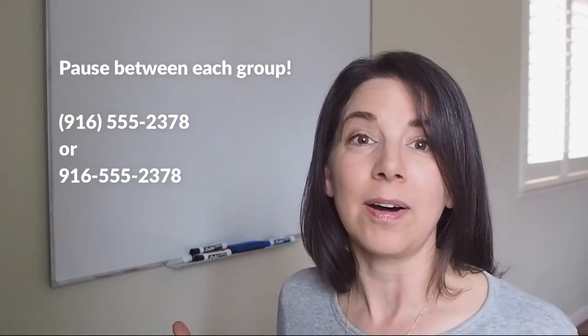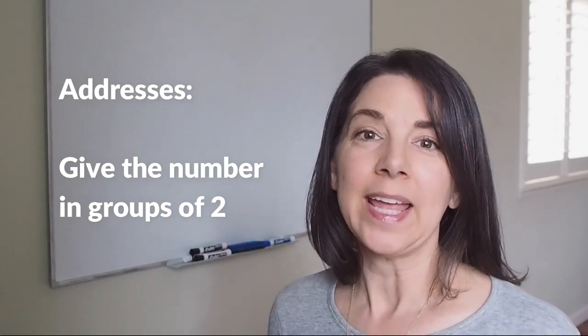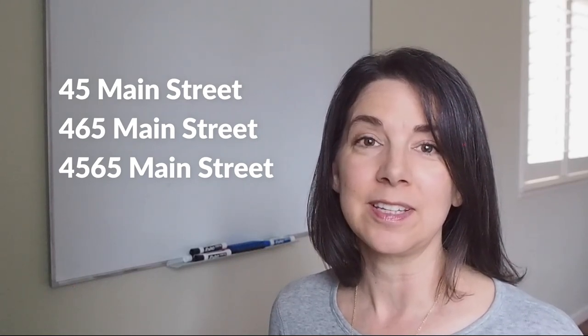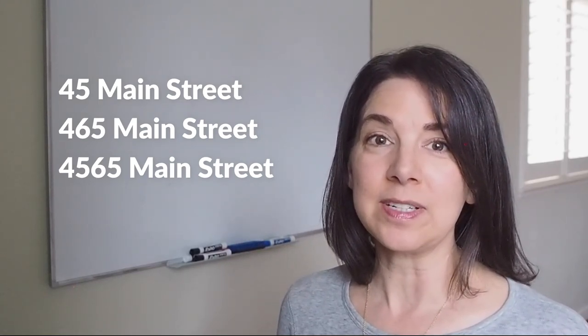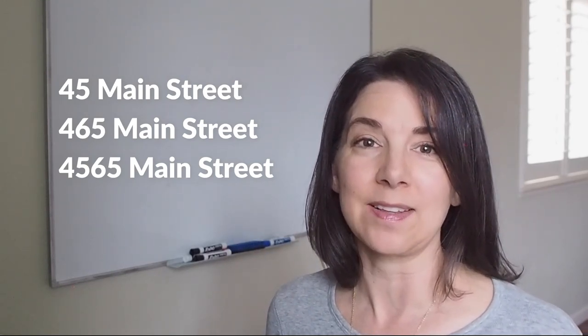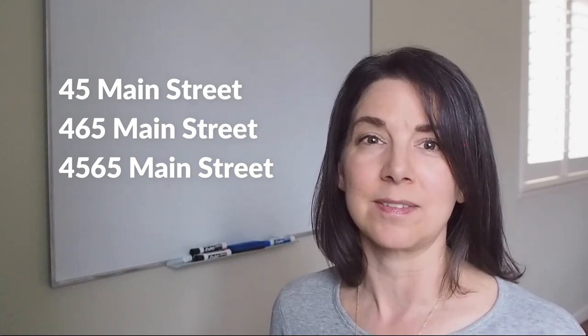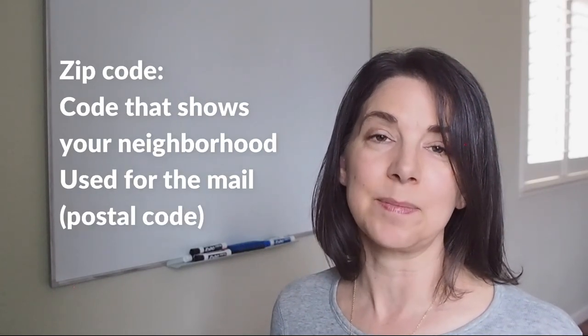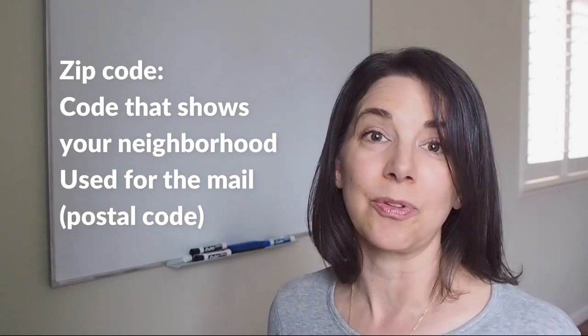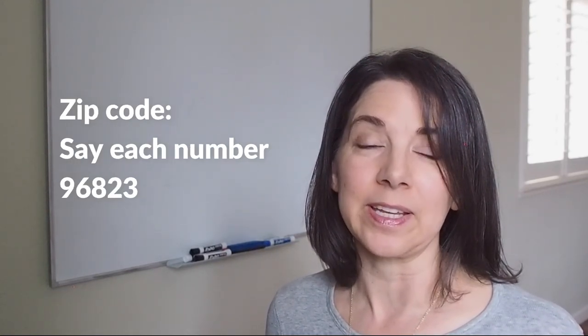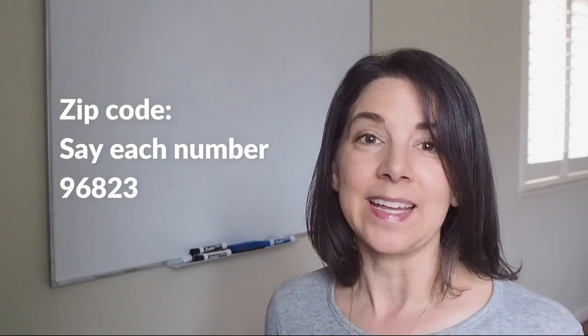For addresses, we usually give the number in groups of two. For example, 45 Main Street, 465 Main Street, 4565 Main Street. So for the last one, we don't say 4000 blah blah blah, we would say 4565. And for zip codes - and a zip code is to show the area where you live - for the zip code we say each number separately. For example, 9-6-8-2-3.